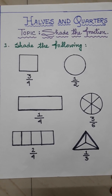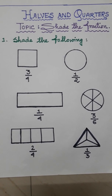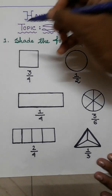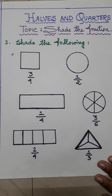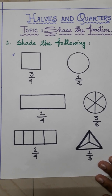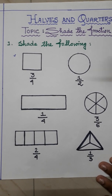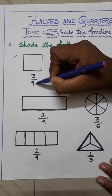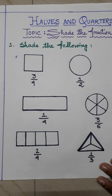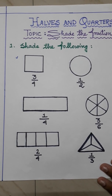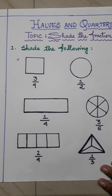The first question is shade the following. Here in the first one, the shape is a square. You have to shade 3 by 4 of the square. How will you shade 3 by 4? First you have to look at the denominator. The denominator is 4, which means you have to divide the square into 4 parts.